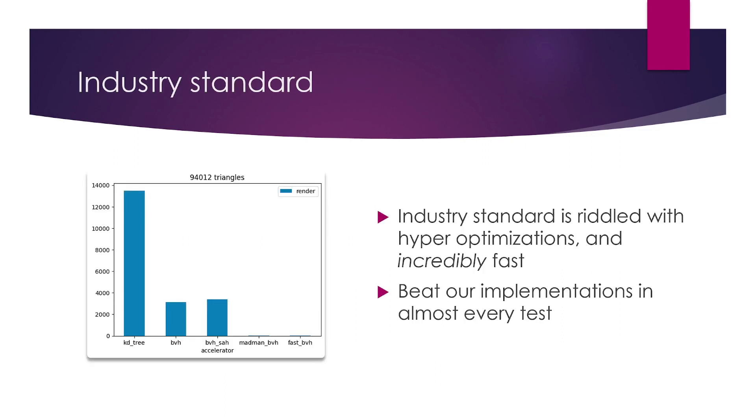Let's move on to the industry standard. It is riddled with hyper-optimizations and incredibly fast. If you look at the graph on the left, you can see that our KD tree is followed by a BVH, and then a BVH with a surface area heuristic, which is still in progress. And then on the right, those two little blue blips you see are industry standards, the madman BVH and the fast BVH. These beat our implementations in almost every single test.